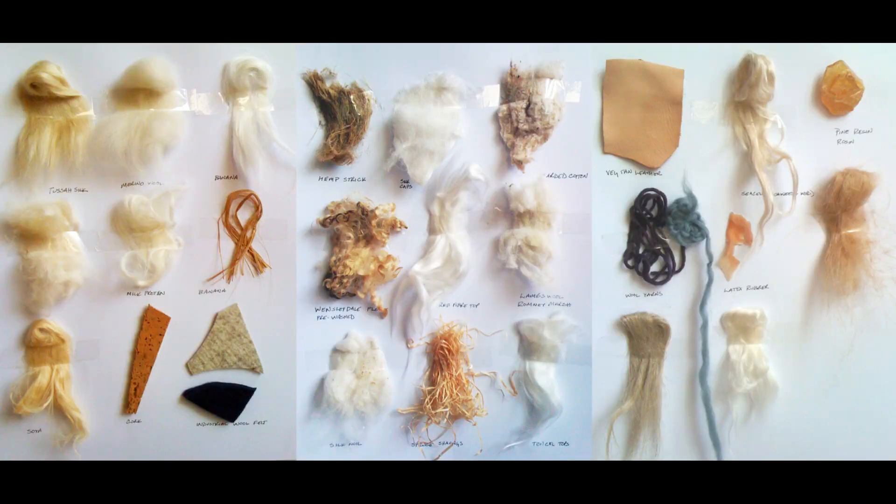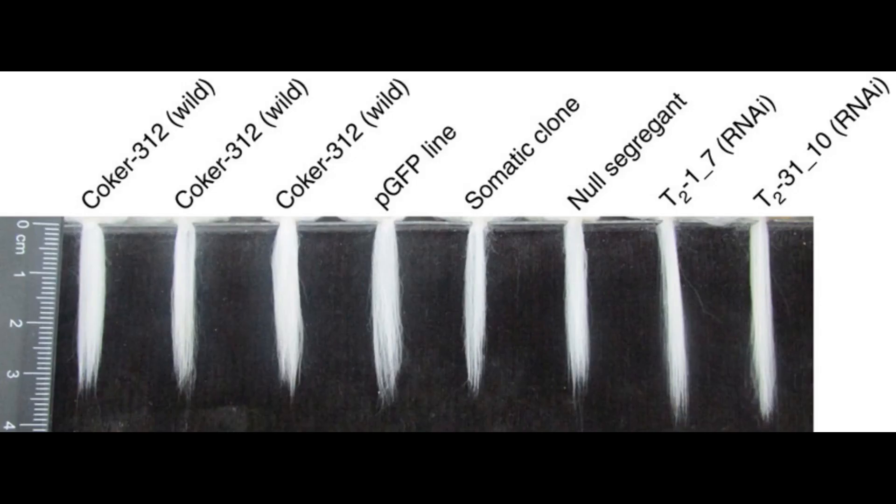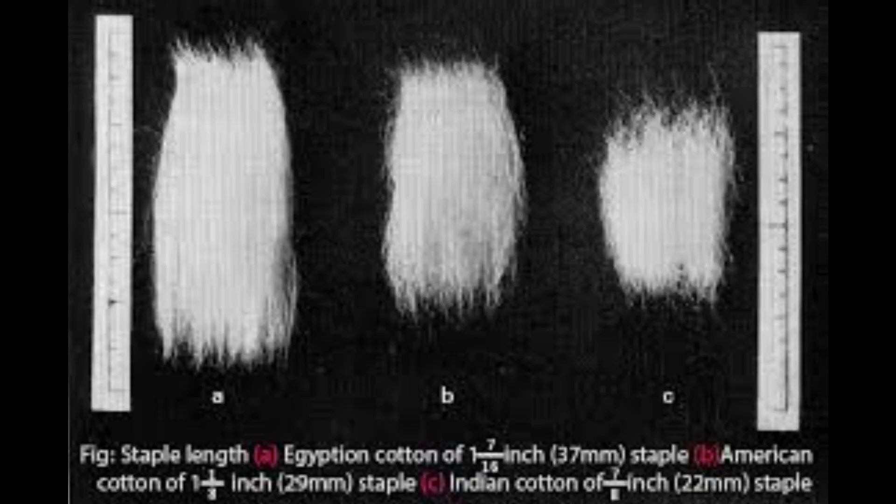Textile fiber must be a minimum of 5 mm in length — shorter fibers cannot be spun together.